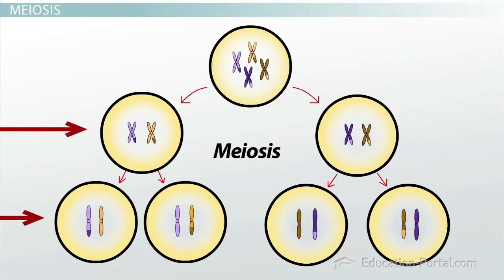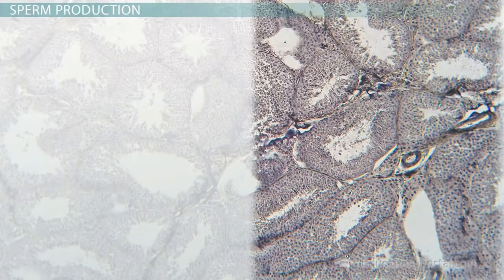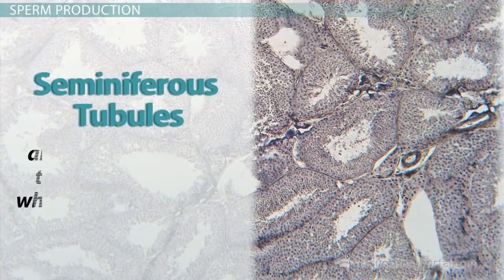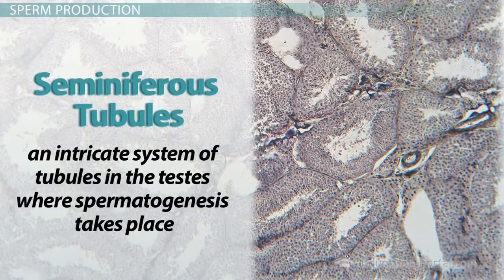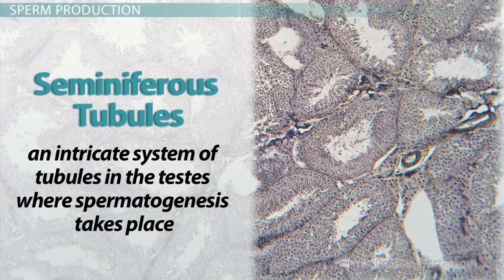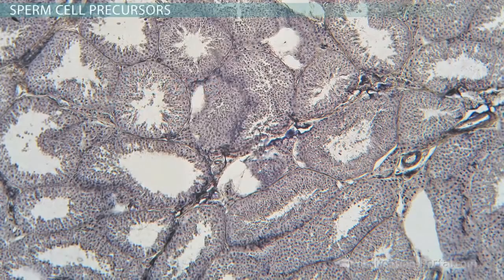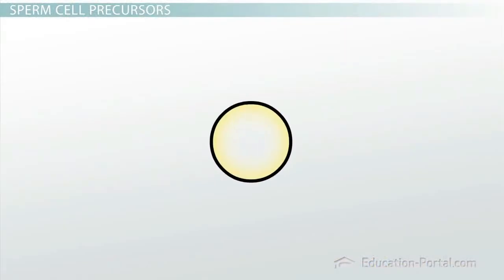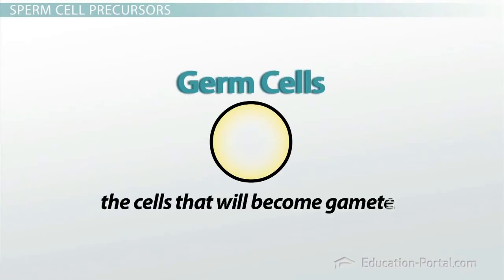In order to create four haploid gametes from a single diploid cell. In humans, spermatogenesis takes place in the seminiferous tubules, which are an intricate system of tubules in the testes. The seminiferous tubules of an adult human male can sometimes produce over 100 million sperm per day. The tubules contain a very large and active population of dividing, self-sustaining germ cells, which are the cells that will become gametes. The germ cells found in the testes are called spermatogonia.